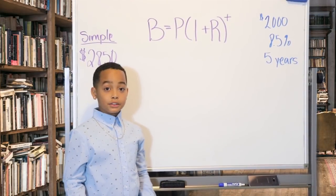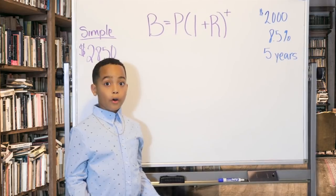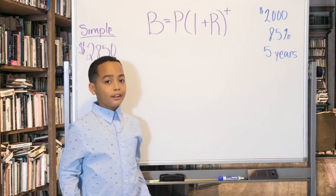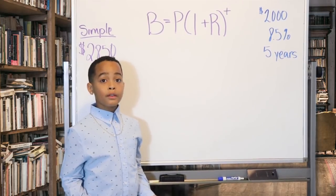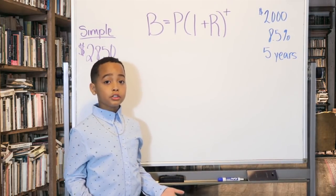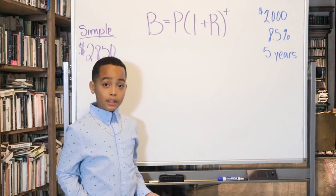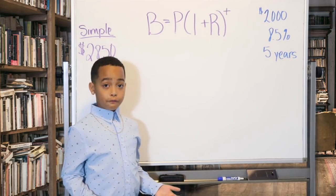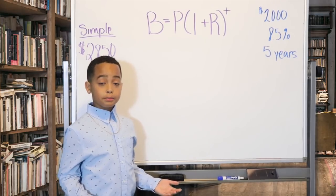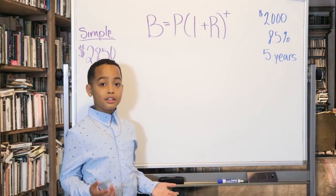Compound interest represents the amount you earn from your initial investment in addition to the interest you earn on top of the interest that has already accrued. You can calculate compound interest using the formula B equals P(1+R)^T, where B is the balance, P is the principal, R is the interest rate expressed as a decimal, and T is the time in years.